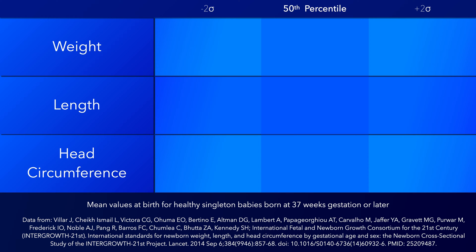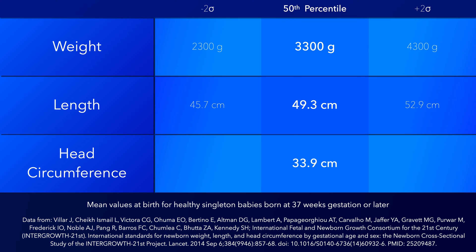In this table, three values are provided for each parameter. The birth weight of healthy term singleton babies is 3,300 grams, with a standard deviation of 500 grams. The overall birth length was found to be 49.3 centimeters, with a standard deviation of 1.8 centimeters, and the overall mean head circumference was 33.9 centimeters, with a standard deviation of 1.3 centimeters.